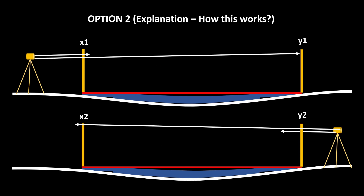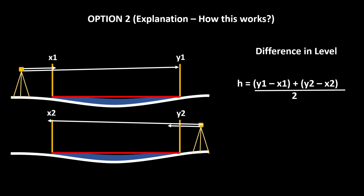Now, how do you calculate the height difference between the two staff readings? Assume the left side staff is x and the right side staff is y. From the left side, readings are x1 and y1; from the right side, readings are x2 and y2. The difference in level between the staffs will be (y1 − x1) + (y2 − x2), divided by 2. In this observation you don't need to apply any correction.